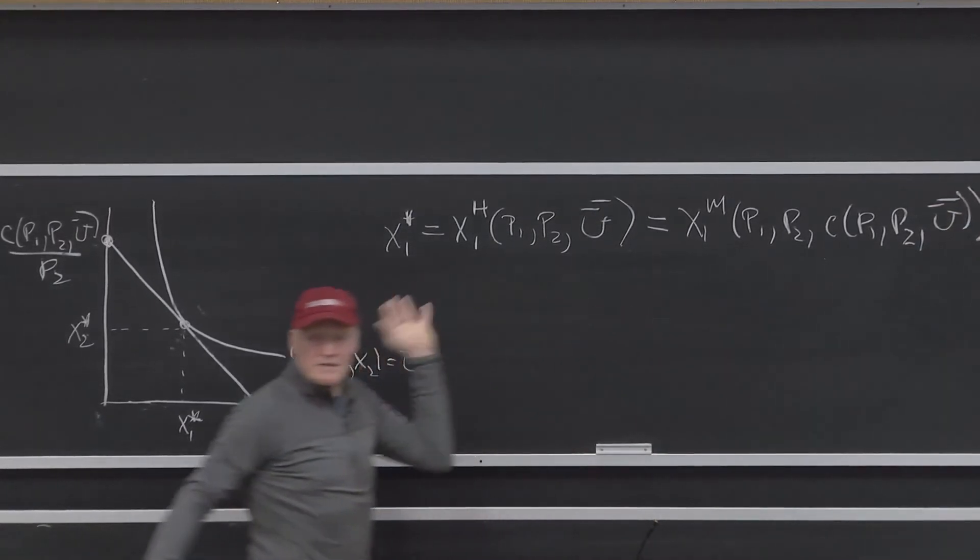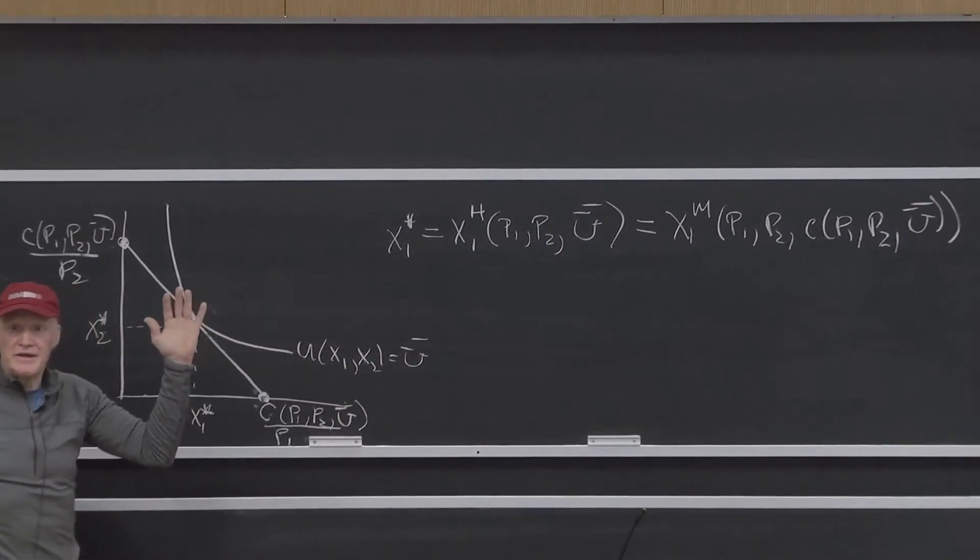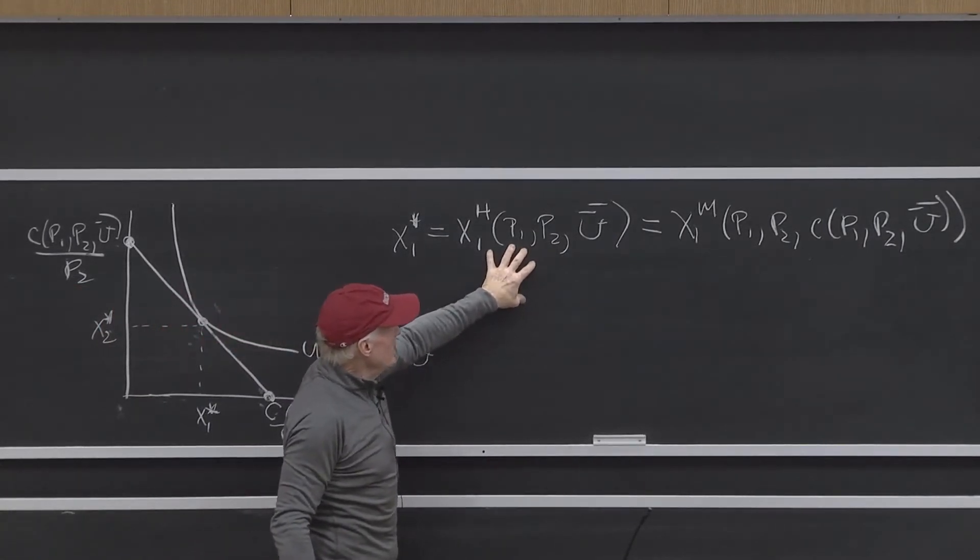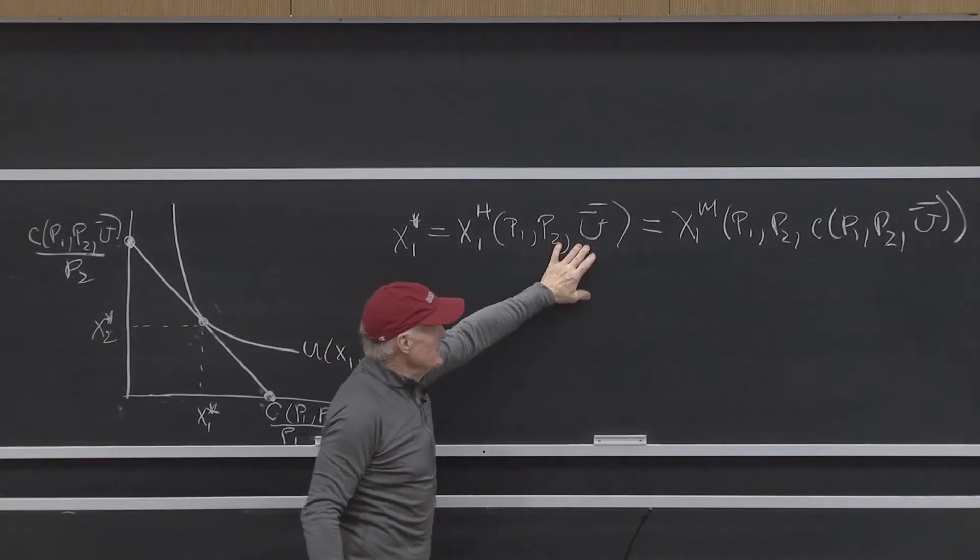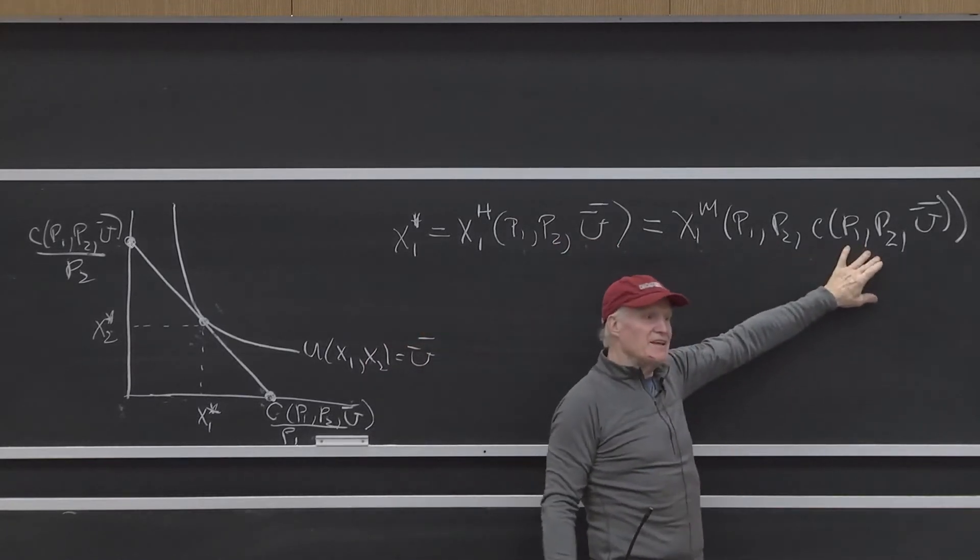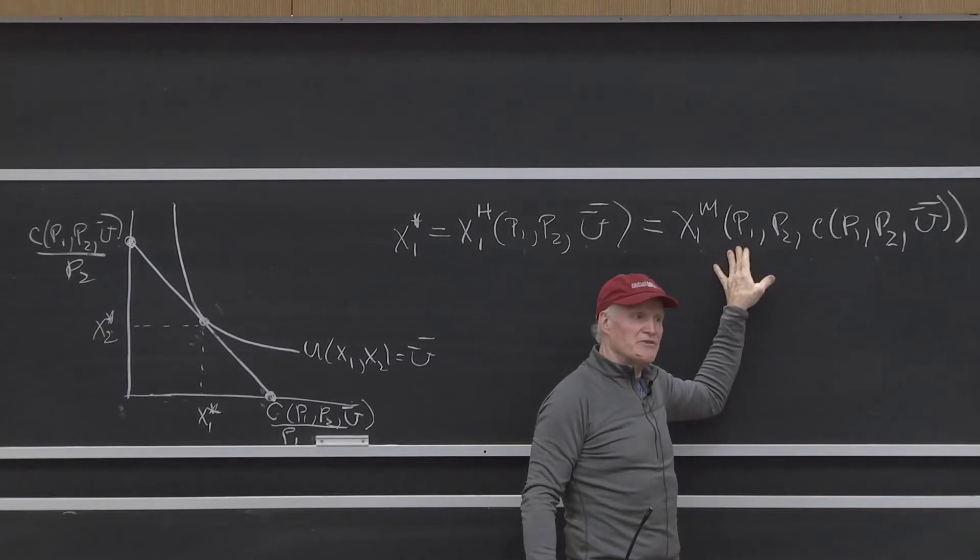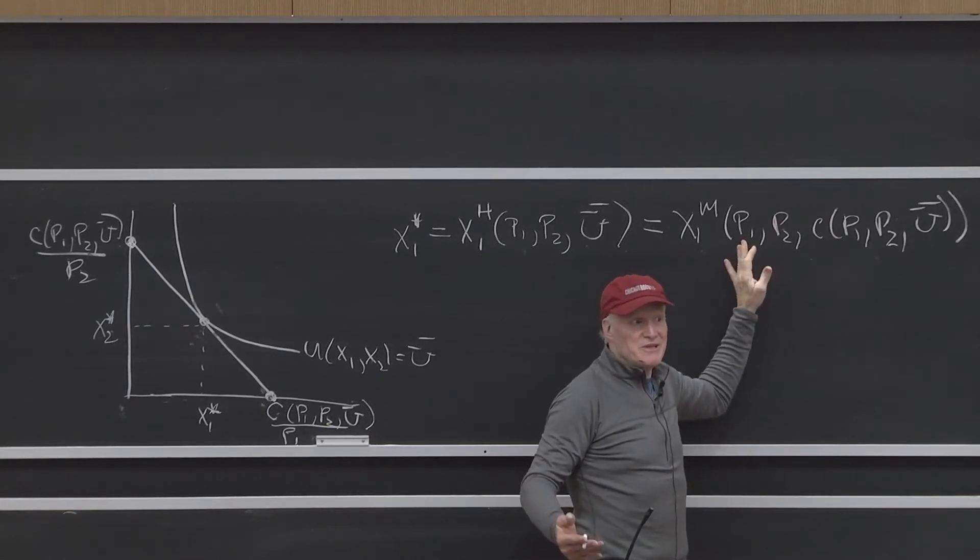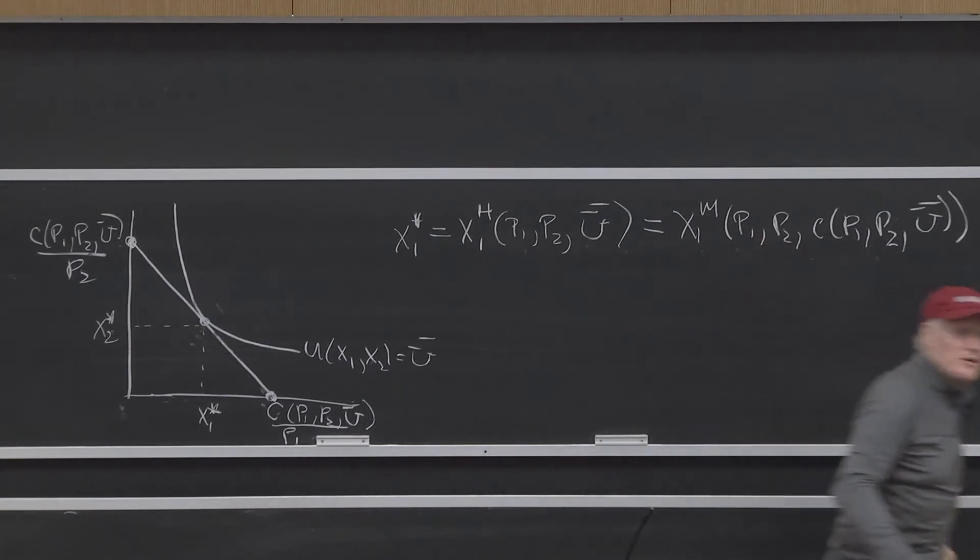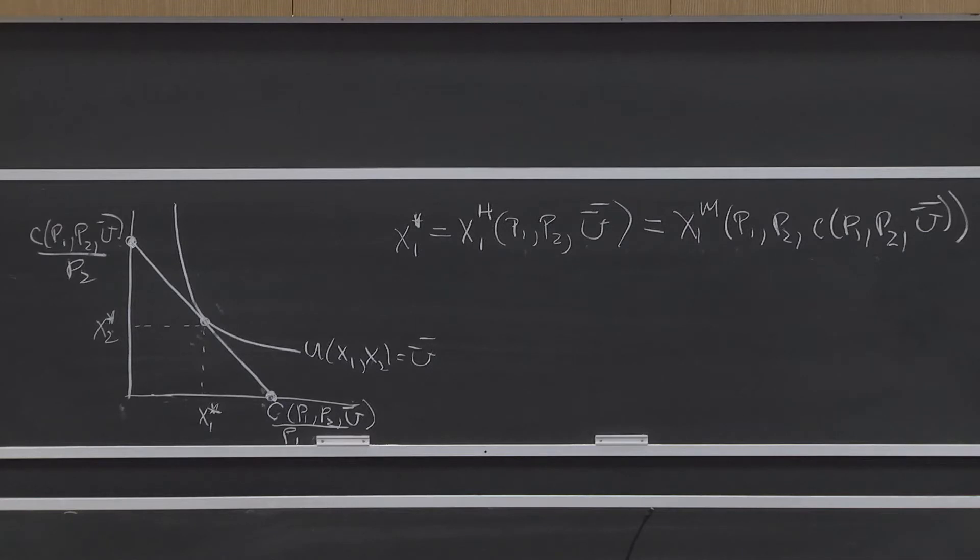All right, that's the correspondence between the two systems. It says the Hicksian amount at a given level of utility is the same as the Marshallian demand curve if I give you exactly enough income to reach that level of utility. Kind of obvious once you see it. It actually took people a long time to figure out how to think about it this way. But like most things in life, it's much easier when somebody's pointed it out to you.